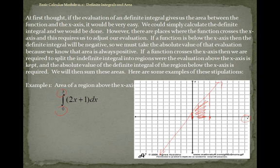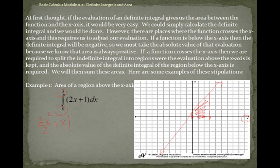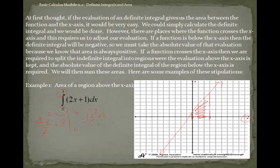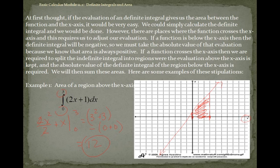Let's find this area. Taking the integral of this function gives us 2x squared divided by 2 plus 1x, evaluated from 0 to 3. The 2s cancel, so plugging in 3 gives us 3 squared plus 3, and plugging in 0 gives us 0. That's 9 plus 3, which equals 12. The area underneath this function is equal to 12 square units.